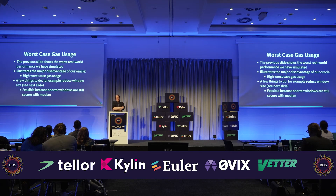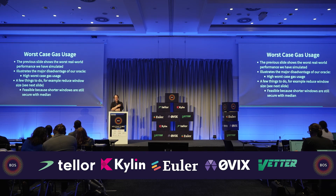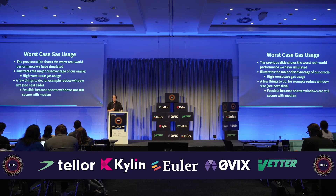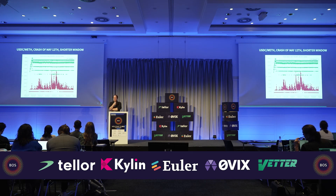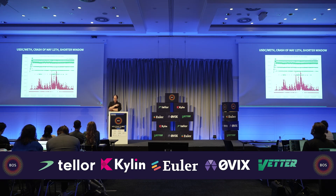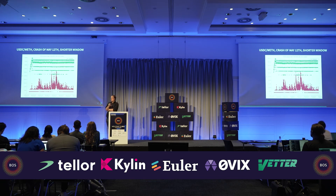However, looking at worst case situations, this is what USDC-WETH did during the crash. Here, Uniswap was actually more efficient than our Oracle at some small periods of time. But one thing we can do to address this is that with median, you may be able to shorten the window and maintain equivalent security. A shorter window results in fewer records read from the ring buffer. With the window shortened to 10 minutes instead of 30 minutes, even during the great crypto crash of May 12th, reading USDC-WETH from the shorter window is more efficient than the Uniswap 3 Oracle.